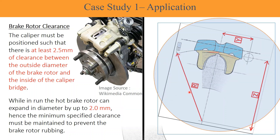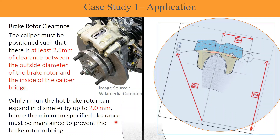The caliper must be positioned such that there is at least 2.5 mm of clearance between the outside diameter of the brake rotor and the inside of the caliper bridge. While running, the hot brake rotor can expand in diameter by up to 2.0 mm. Hence, the minimum specified clearance must be maintained to prevent the brake rotor from rubbing.